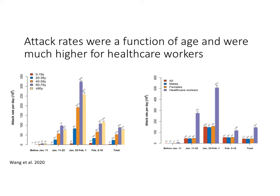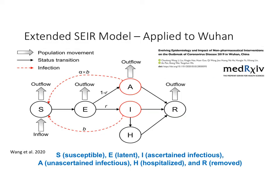These attack rates were a function not only of location but also of age. The highest attack rates were seen for people above 60 — those aged 60-79 and 80+. Attack rates were also significant for people below the age of 20. Attack rates were roughly equal for males and females, but a clear outlier were healthcare workers, who were the most susceptible group in Wuhan.